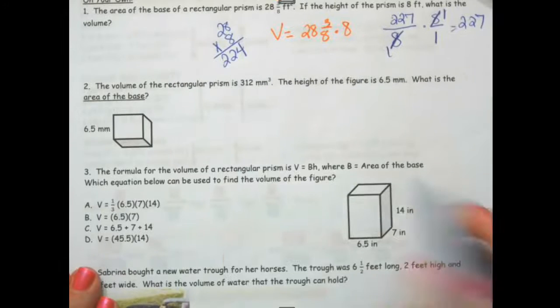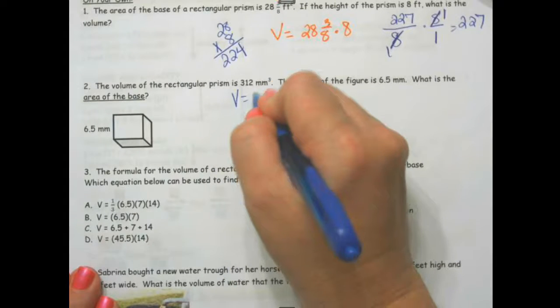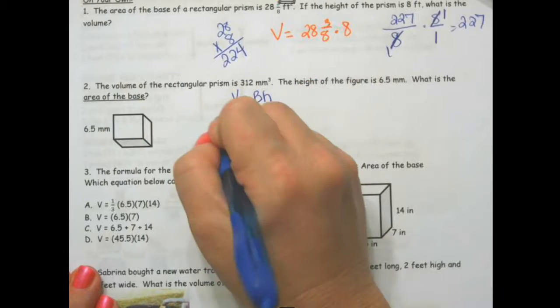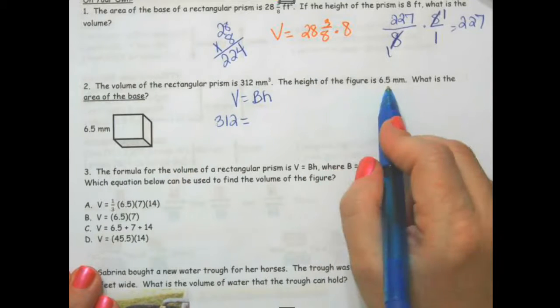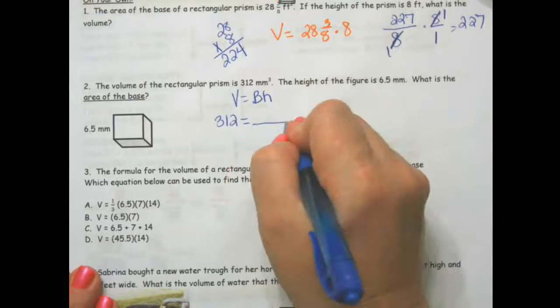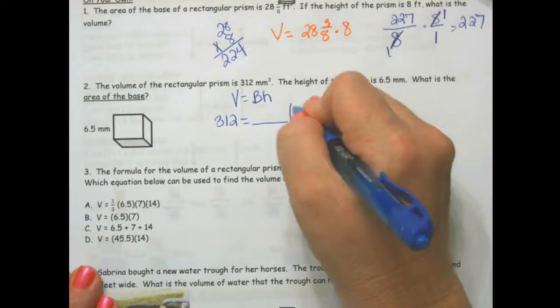The volume of the rectangular prism is 312, so the volume equals B times H, so 312 equals. So we are trying to find the big B, and this is 6.5, so this is what we're trying to find.